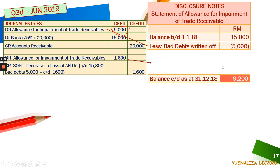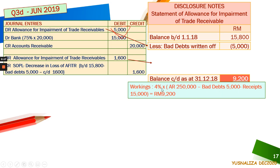After you have done that, you will compute what is your expected credit loss, or the estimation of your allowance for impairment for that year. Here it is 9,002, because you use the estimation based on 4% times the account receivable balance. The account receivable balance before adjustment was 250,000, but there was bad debts written off as well as receipt of payment received from your customer. So at the end, it is left at 230,000. So 230,000 times 4%, you have 9,002. That 9,002 is the last total here, which is the estimation at the end of the year.